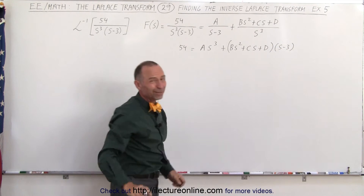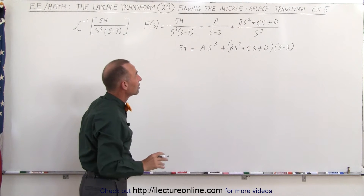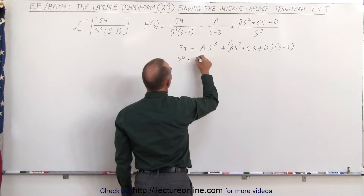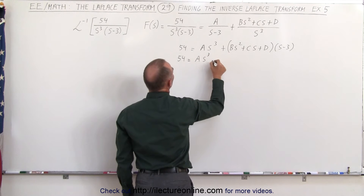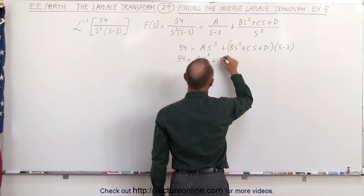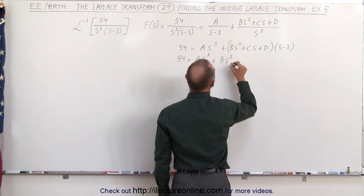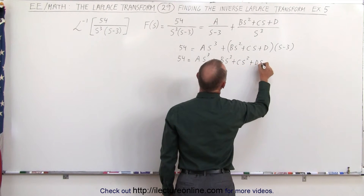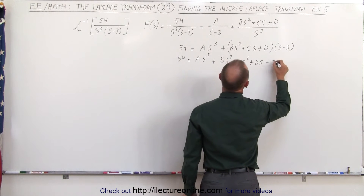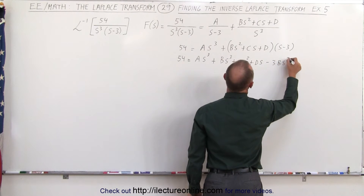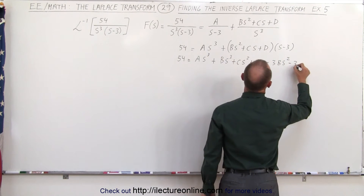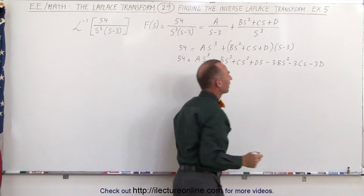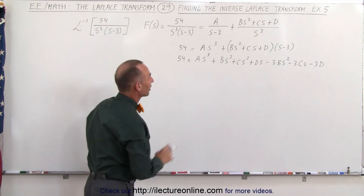Multiplying this out — because that makes it easier to see what the numbers are equal to — we get: 54 is equal to a s cubed plus b s cubed plus c s squared plus d s minus 3b s squared minus 3c s minus 3d. Now we're ready to start matching everything up.